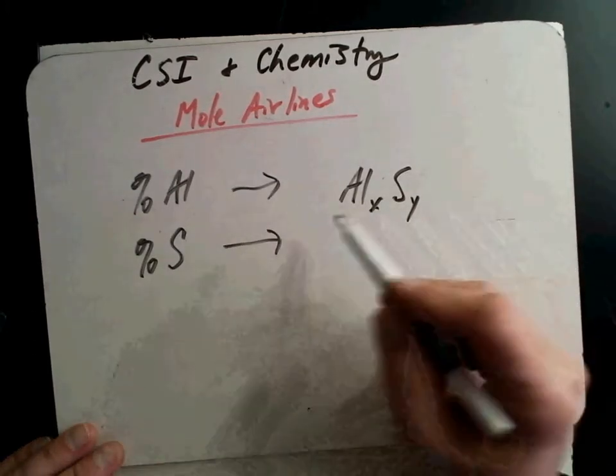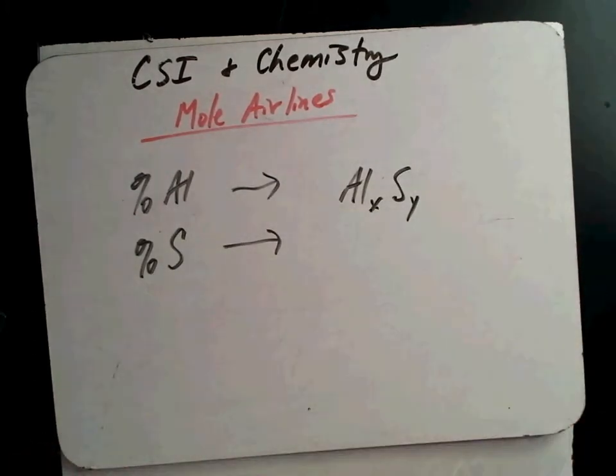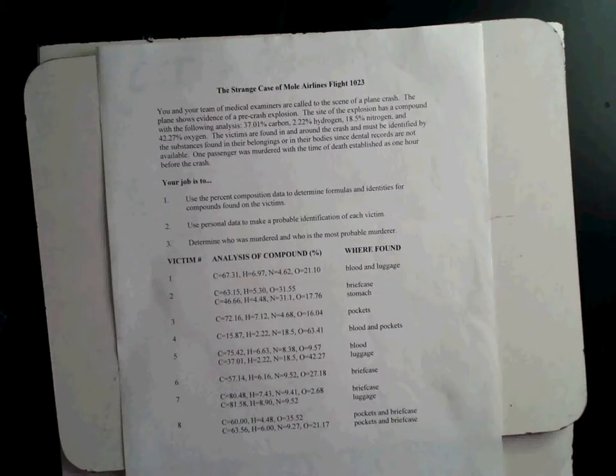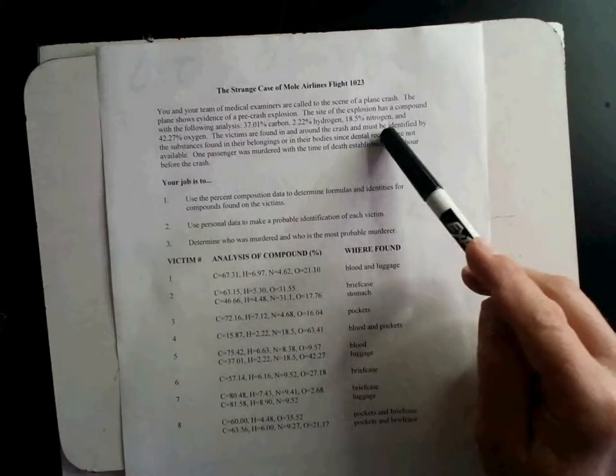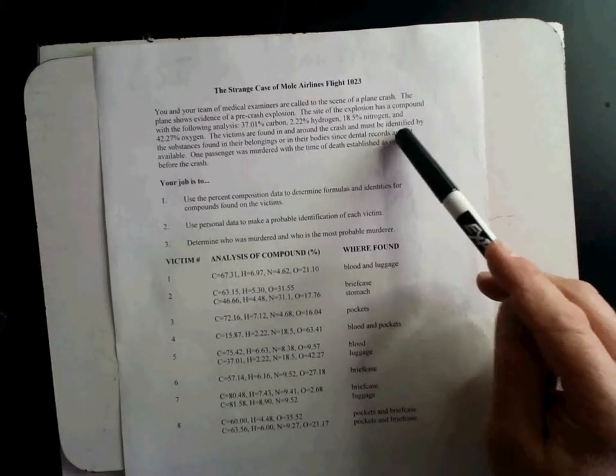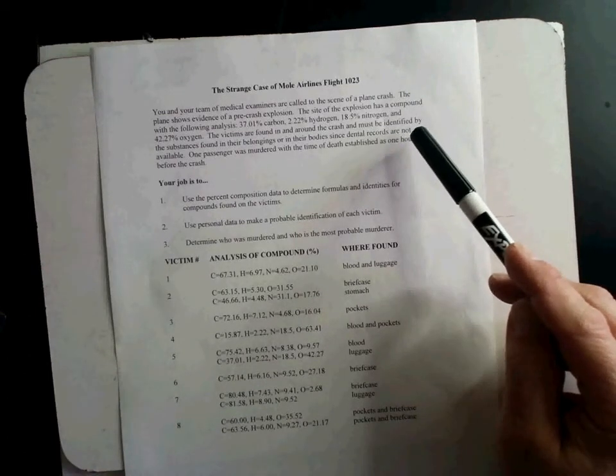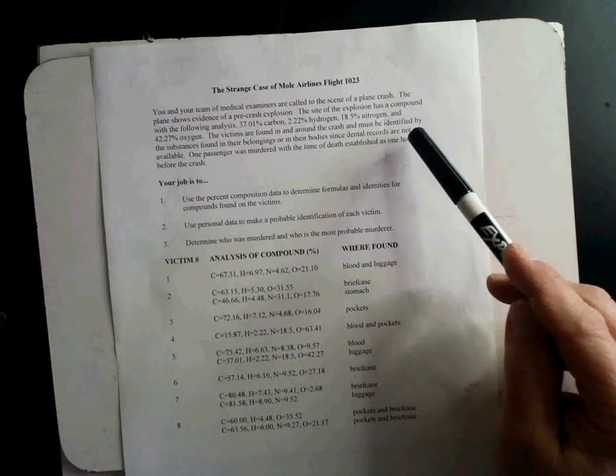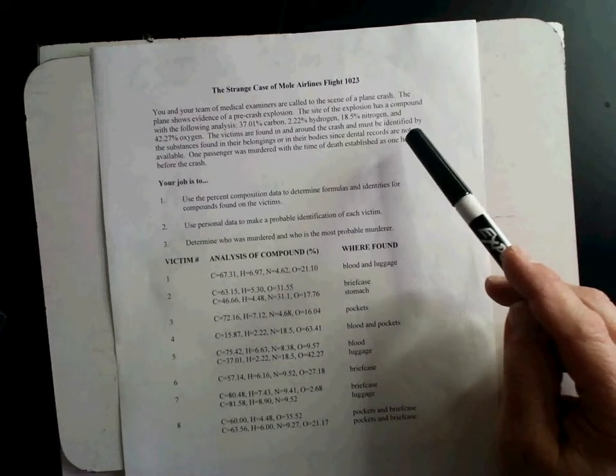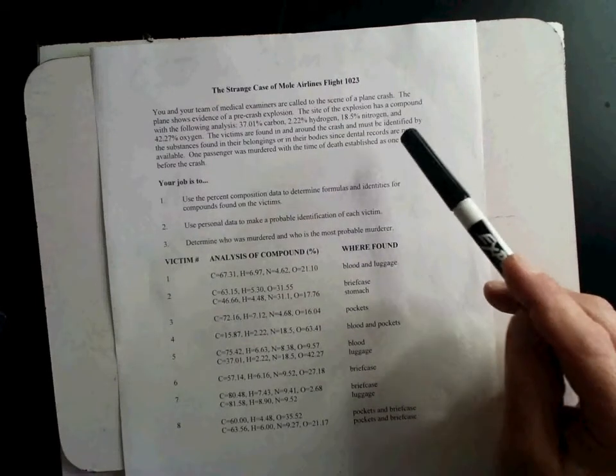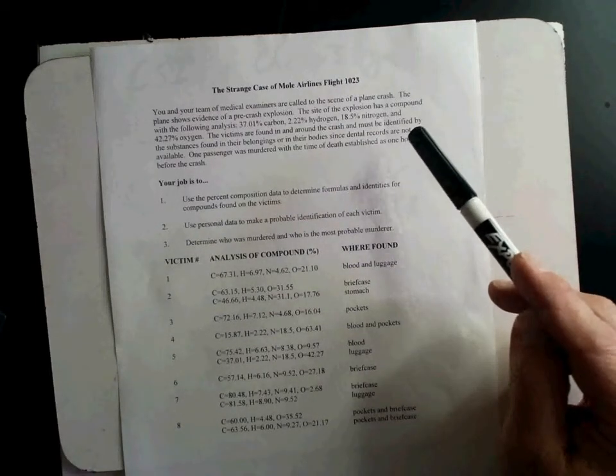Somebody who did a really good job put together this Moll Airlines murder mystery. When you go into this murder mystery, you'll want to make sure you read paragraph one really well. Basically what's happened is there is a flight on an aircraft, and all the different characters that are on the plane, the plane explodes in air.